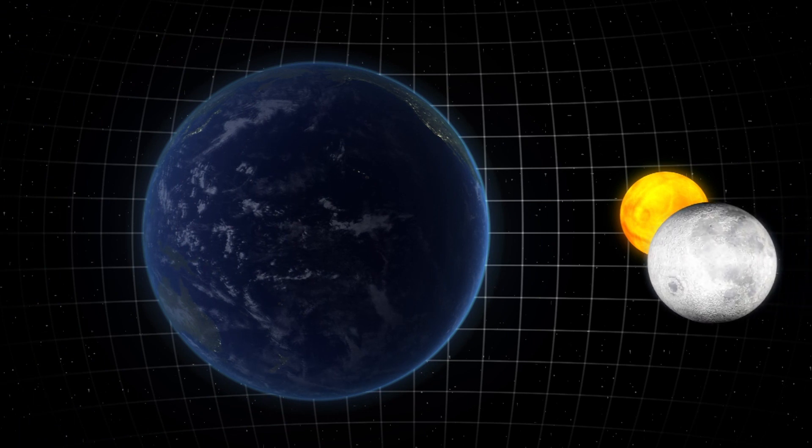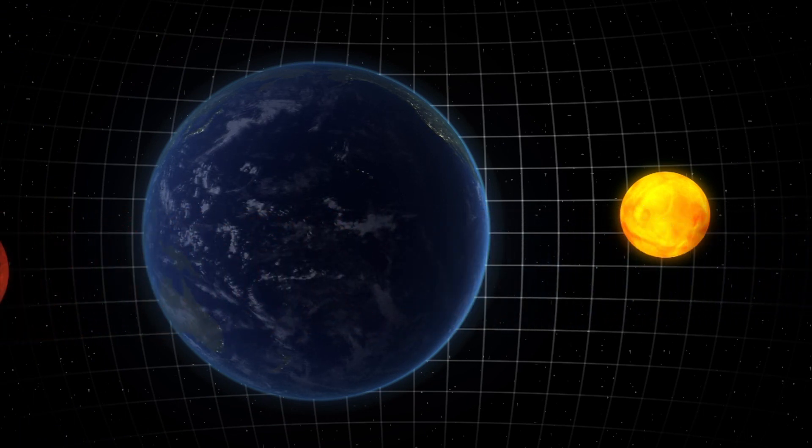When the moon passes through the Earth's shadow during the January 31st lunar eclipse, it will appear red. This is also known as a blood moon.